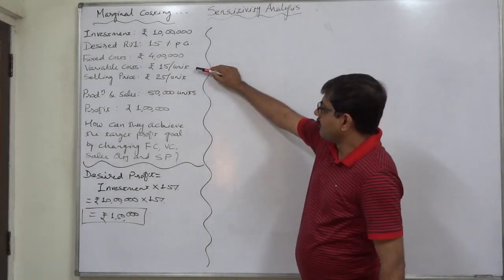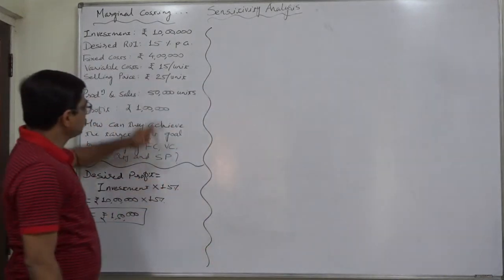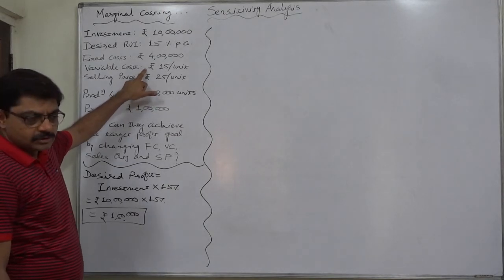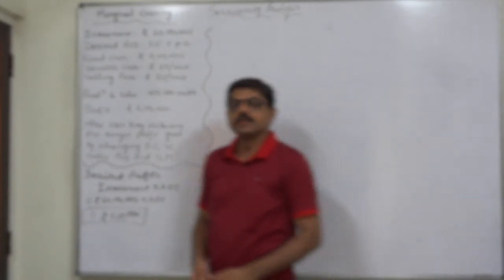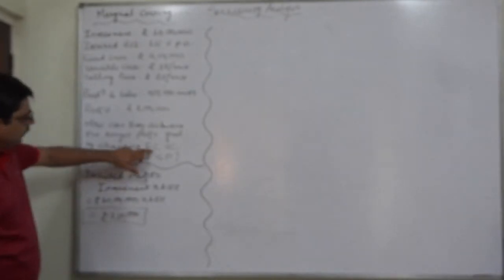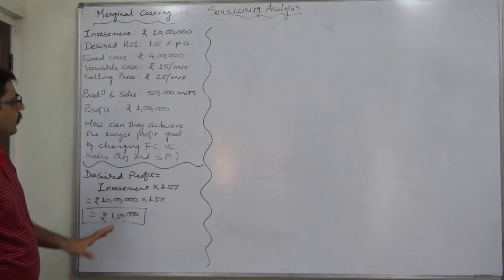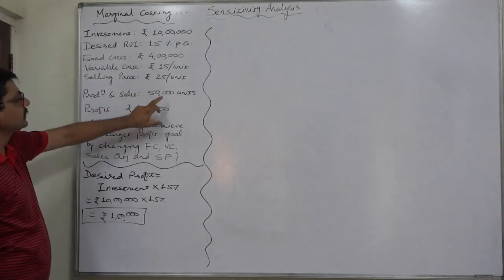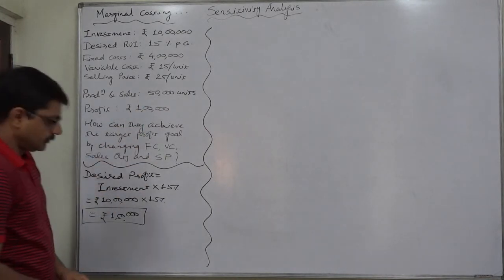Similarly, bargaining, increasing the efficiency of labor force, those types of efforts can be taken to decrease the variable cost. These types of options are available. Now, first of all, if they consider to decrease the fixed cost, we believe that all other factors remain constant. That means no change in variable cost, no change in selling price, no change in sales quantity.